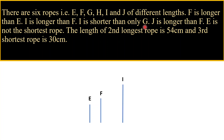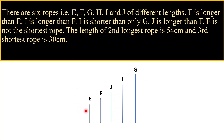J is longer than F. Now, all five ropes are placed and only rope H is left to be placed. It is given that E is not the shortest rope, which means the shortest rope will be rope H.